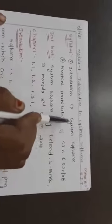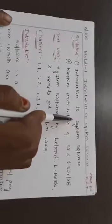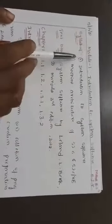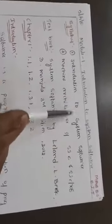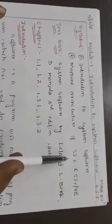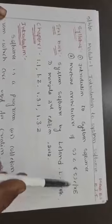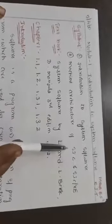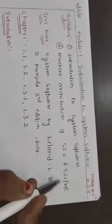The chapter name is introduction to system software. Till now you studied about module 3 and module 4 for compiler design. Now I move on to module 1 for system software. This syllabus covers introduction to system software and machine architecture for SIC and SIC/XE.